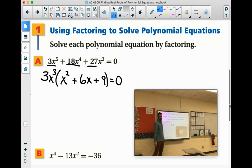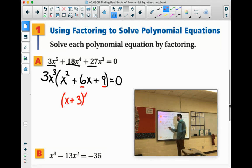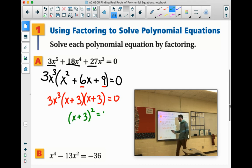Now look at what's left inside the parentheses. x squared plus 6x plus 9. What factors of 9 add up to 6? 3 and 3, right? So we would say x plus 3 times x plus 3. And bring down the rest of this stuff here. We can even clean that up a little bit more. x plus 3 times x plus 3 would be written as x plus 3 squared.